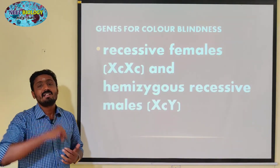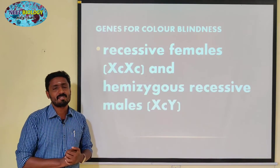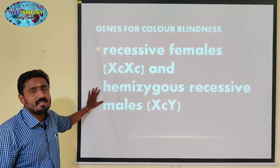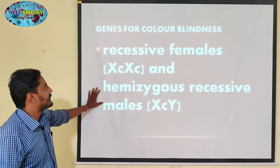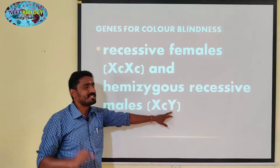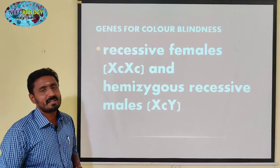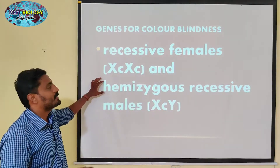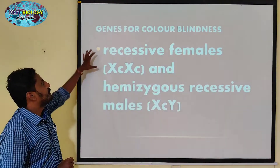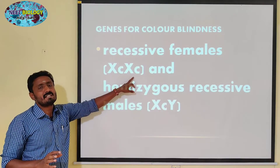We will talk about hemophilia in the second part — you can see the link in the description. The hemizygous condition means the Y is suppressed and the C gene is expressed without any interference. So for females, two recessive C alleles are needed for colorblindness.